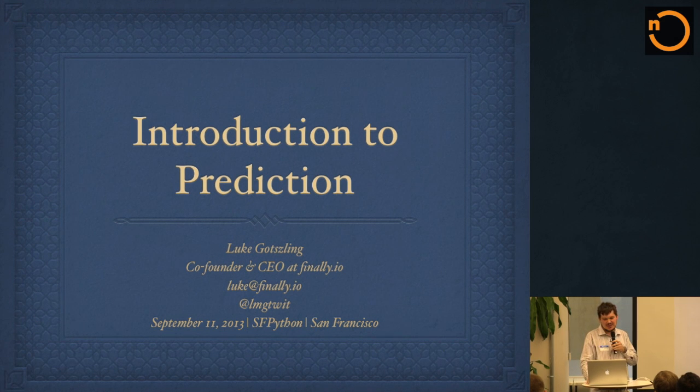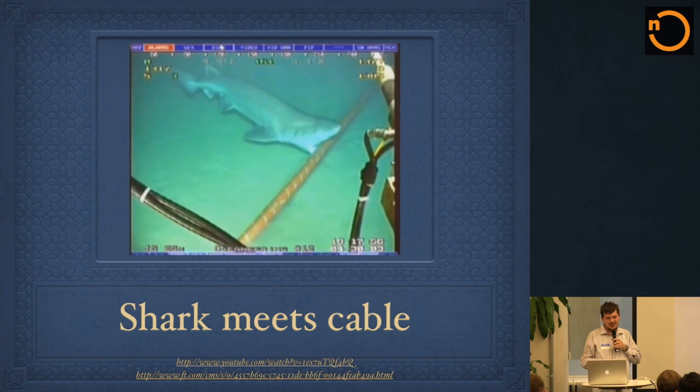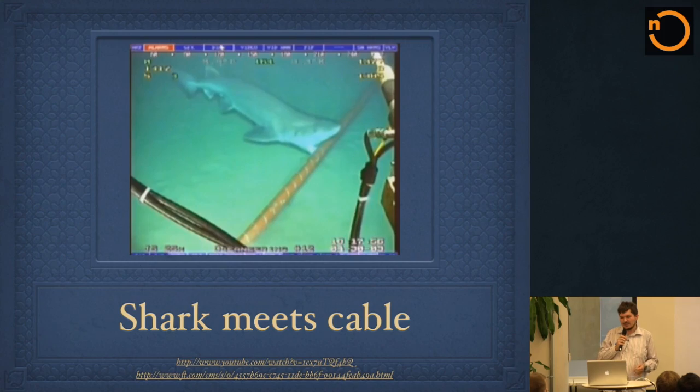So this is going to be an introduction to prediction in five minutes. Prediction in general is, there are things that are more predictable than others. In this case, there's a shark biting an undersea cable, probably not predictable, but perhaps we can figure out how many of these things are happening in a given year, but we can't predict any single individual event. I'm going to talk about predicting numerical things that are predictable. There are things that have different levels of predictability. So the assumption here is that what you're trying to predict is actually predictable.